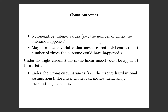Under the right circumstances we could apply the linear model to count data and get basically the right result. Under the wrong circumstances — that is, having the wrong distributional assumptions — the linear model could be inefficient, inconsistent, and biased. The right circumstances would be when all counts are well away from zero, but even then the count model is probably the right thing to do.